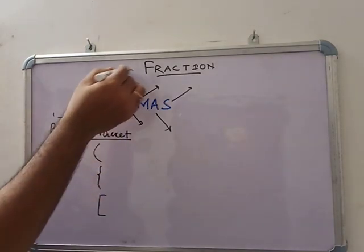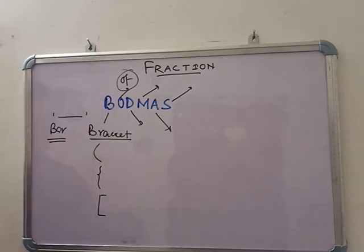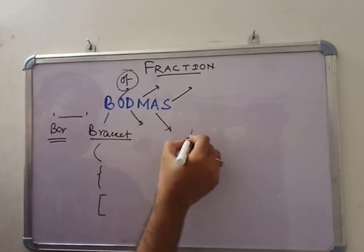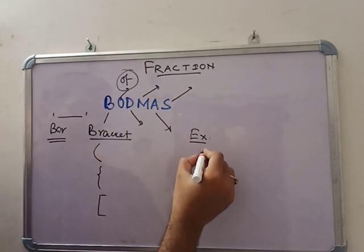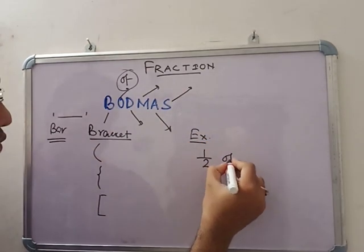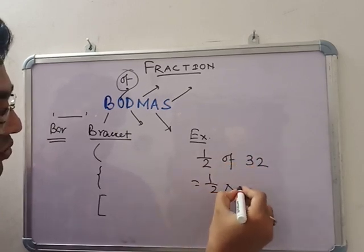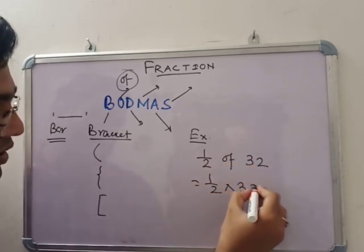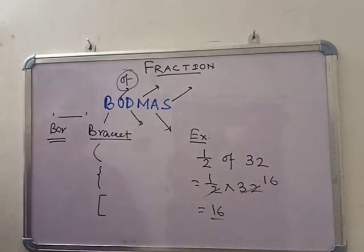Now, what is 'of'? The new operation 'of' is included now. 'Of' means multiplication. For example, 1 by 2 of 32 — that means 1 by 2 into 32, that means 16. So 'of' means 'into'.